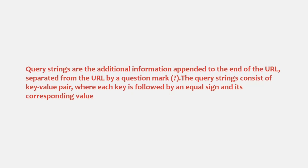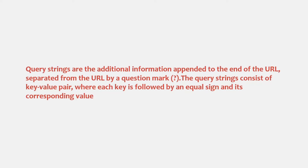Query strings are the additional information appended to the end of the URL, separated from the URL by a question mark. The query strings consist of key-value pairs where each key is followed by an equal sign and its corresponding value. For example, in a URL to root URL slash users, gender is a key with value male, and isMarried is a key with value false, separated by an ampersand sign.